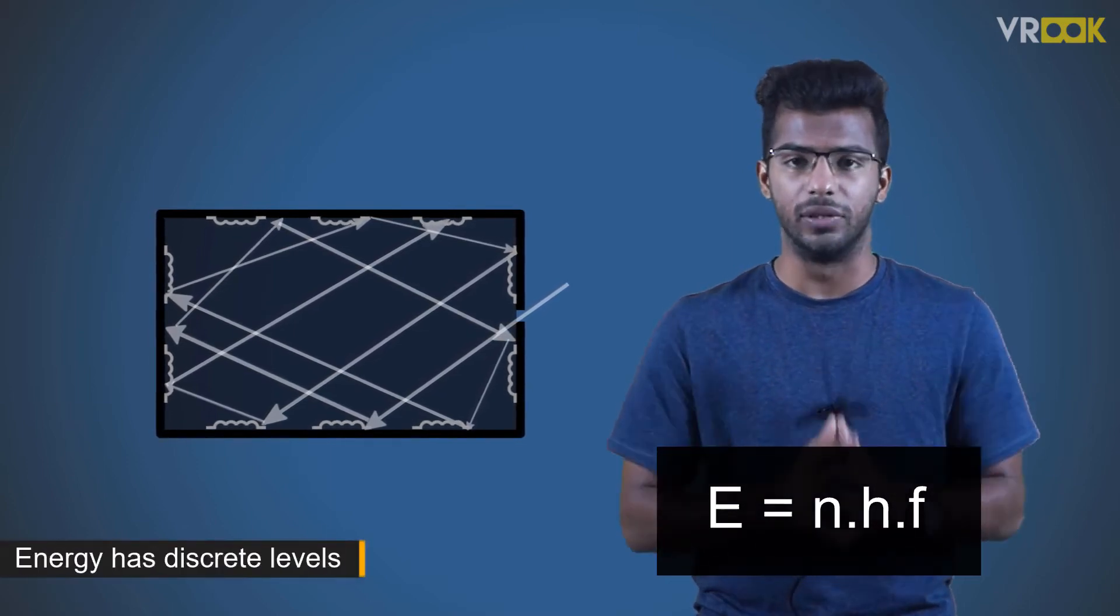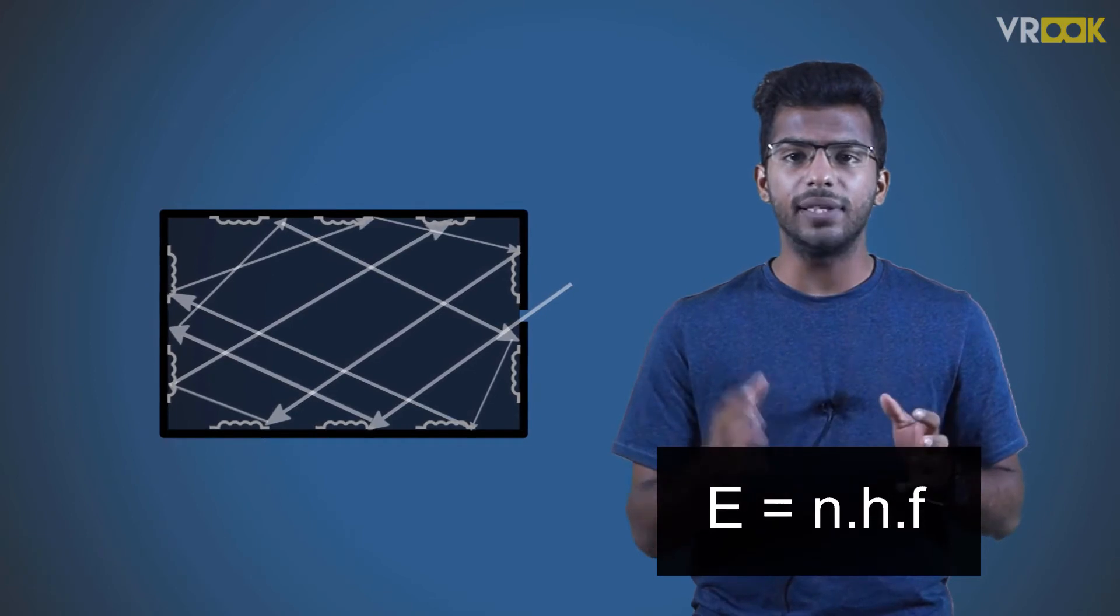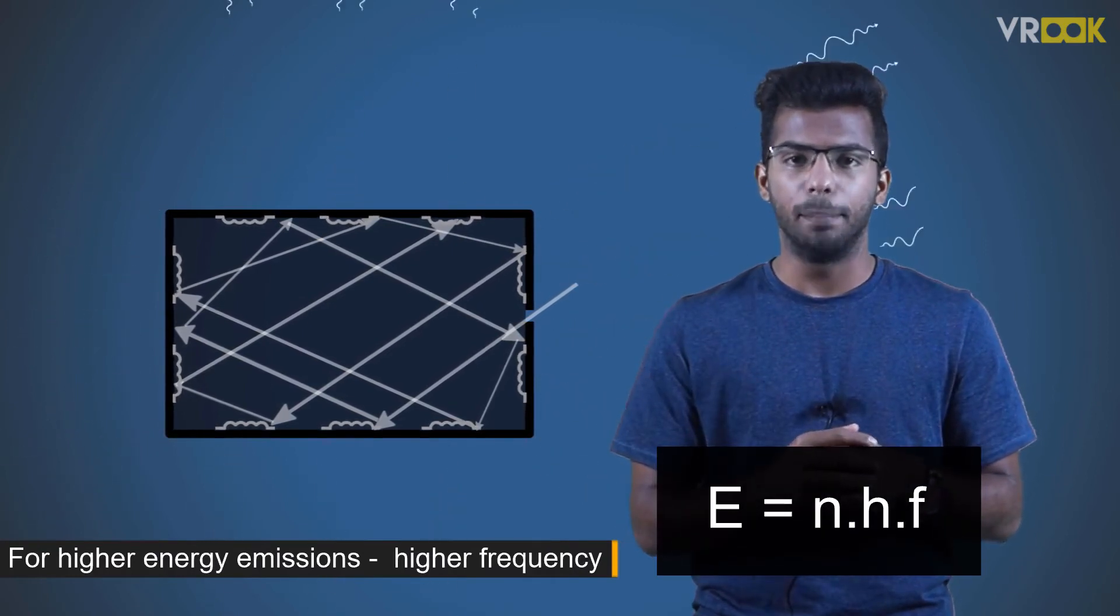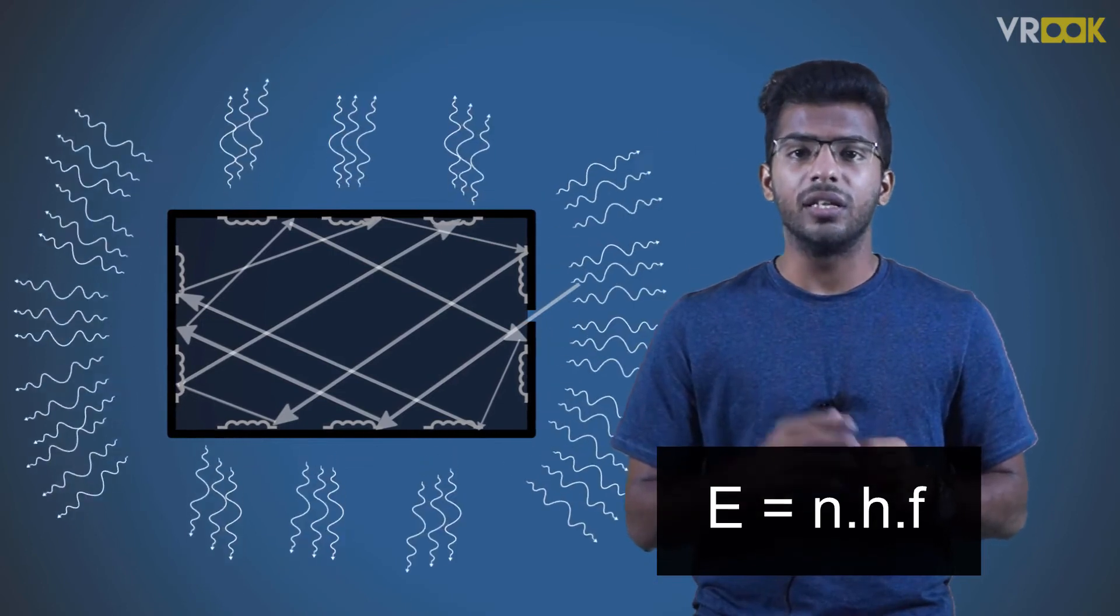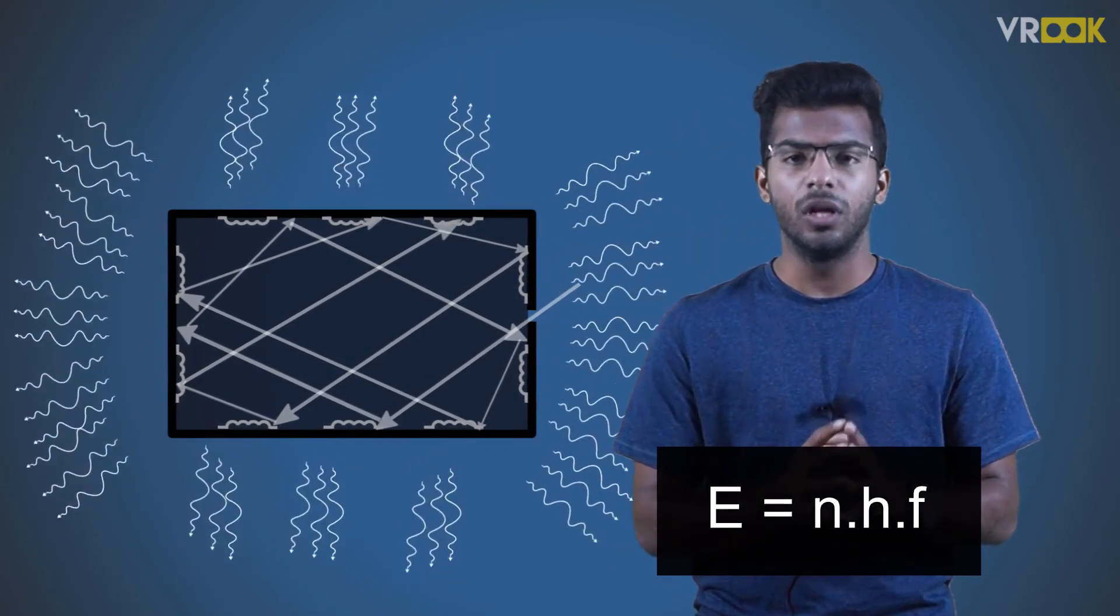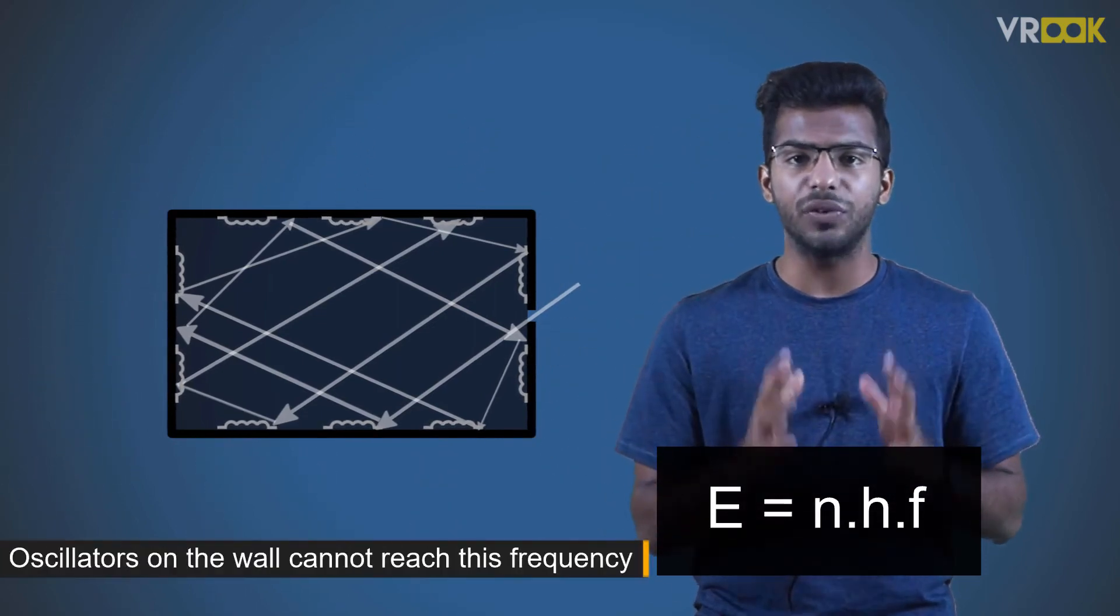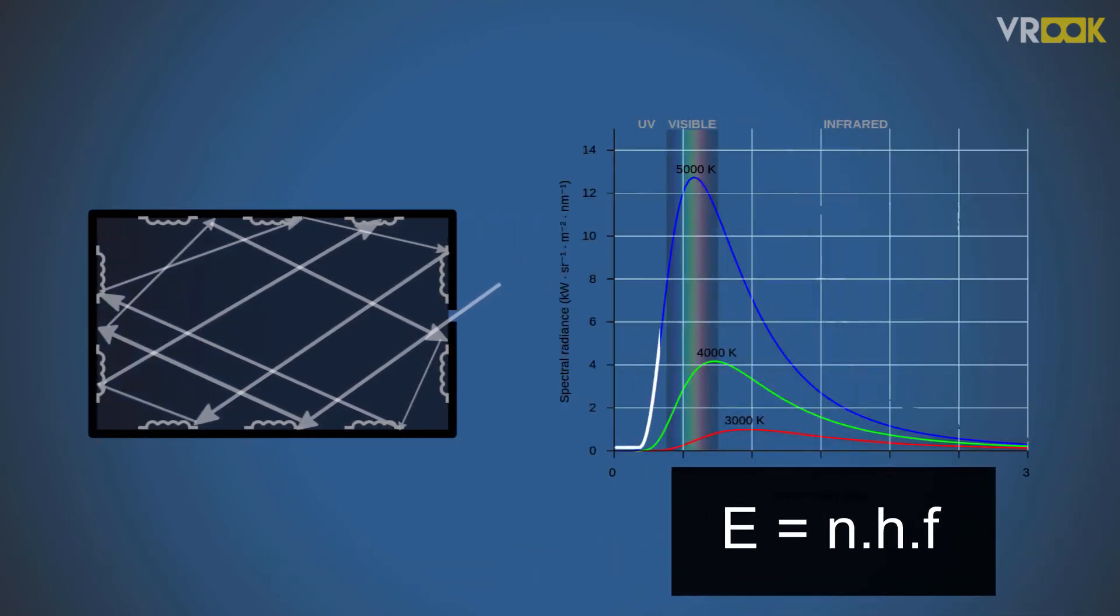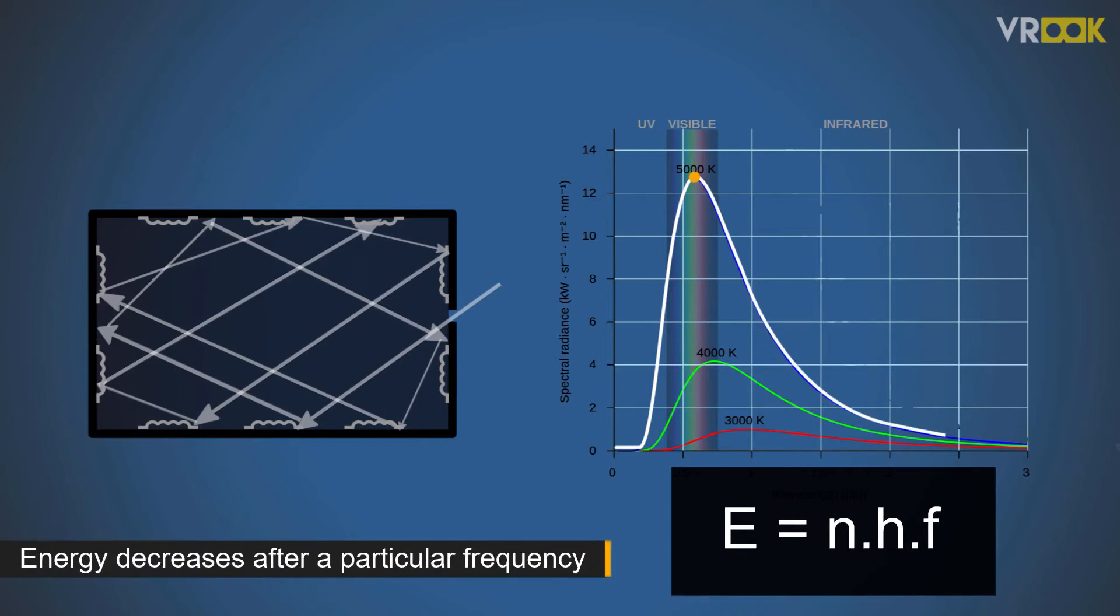So energy has discrete levels. According to the equation E equals n·h·f, for higher energy emissions, the frequency of the oscillator should also be higher. But if the energy emission is very large, then the frequency of the oscillations must also be very large. The oscillators on the wall cannot reach this frequency because it is too high. So the energy emitted from the blackbody decreases after a particular frequency and reaches zero. This is because there will be no oscillator that can oscillate at such a high frequency. The oscillators do not have enough energy to emit because you cannot have 1/2 quanta or 1/4 quanta of energy, according to Max Planck.